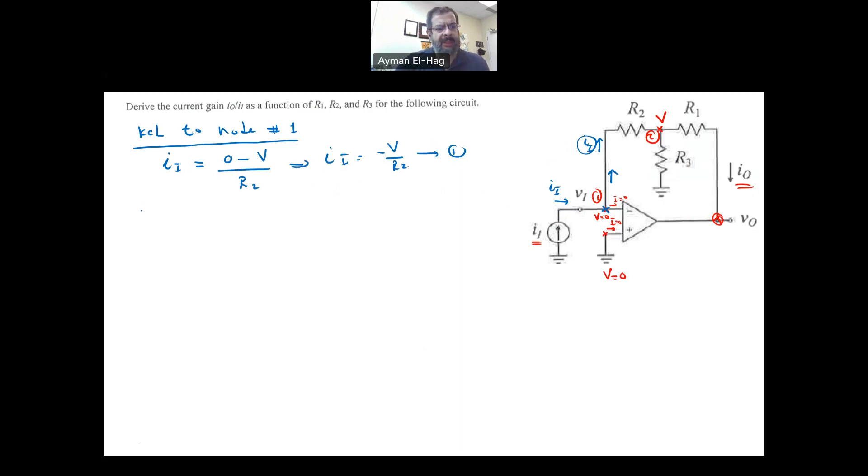Now we will apply KCL to node number two. This node has the current I_in entering. We have a current here and the current I_out there as well. We can apply KCL at node number two.